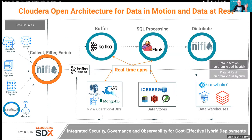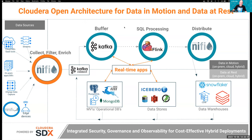All with the same set of open source tools that run in any environment. Get your data sources, collect them, filter, enrich, get them into Kafka for buffering and distribution, then into Flink for SQL processing. These can be stored to your different operational data stores and databases — from Iceberg to Ozone to Postgres to Mongo to Kudu to Snowflake. Do that securely with full observability, full scalability, and as cost-effectively as possible. Move that workload wherever in your hybrid environment makes sense — managed in one place at any scale.